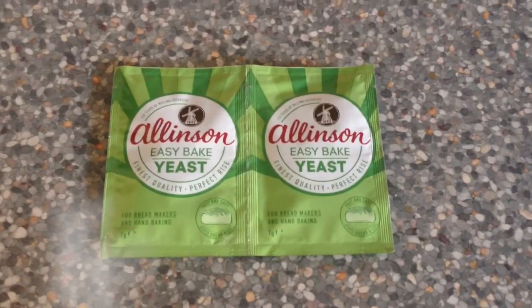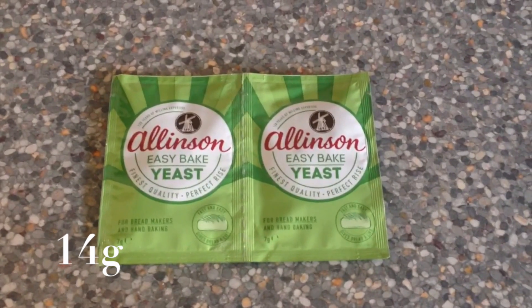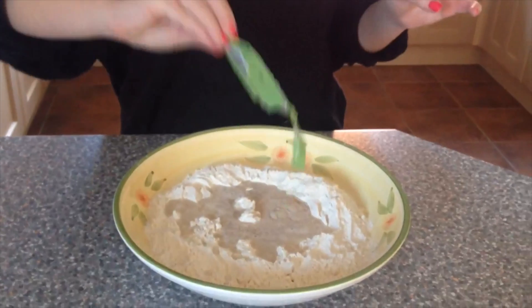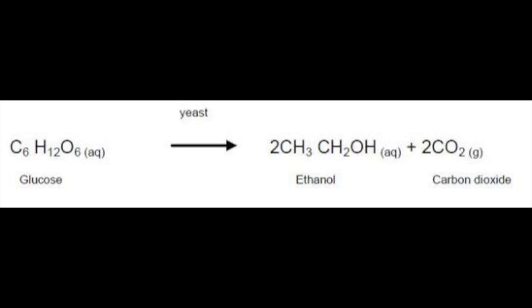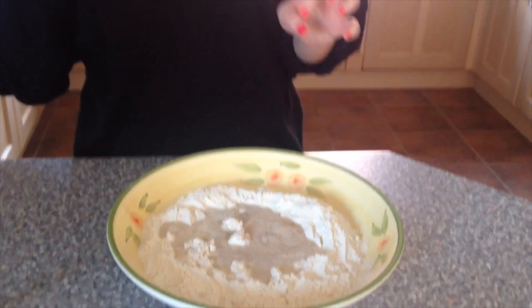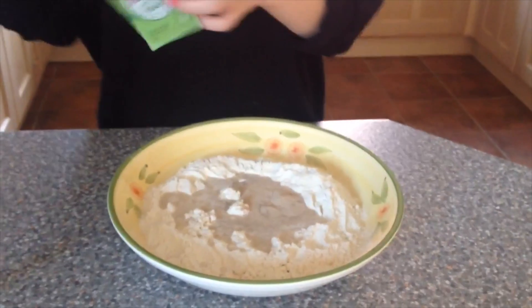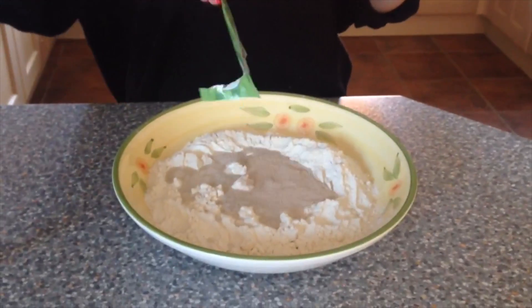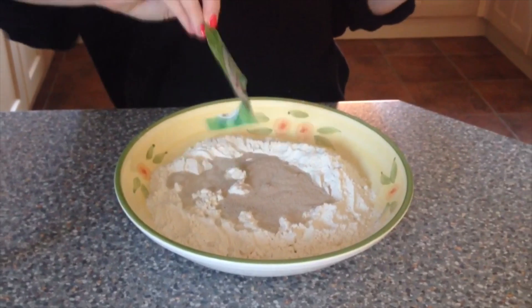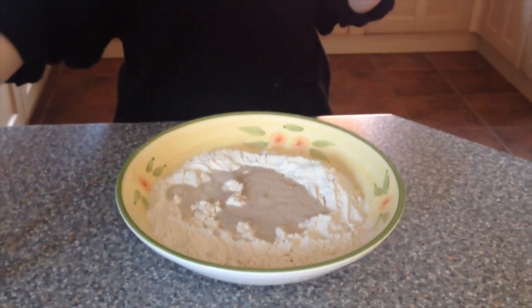Next, 14 grams of yeast is added. Yeast is a fungus which helps to make the bread rise. As yeast ferments the sugar, CO2 and ethanol are produced. These sugars have been liberated from hydrated starch molecules in the flour using amylase enzymes.